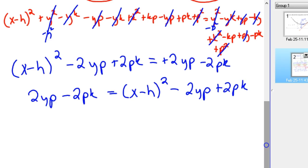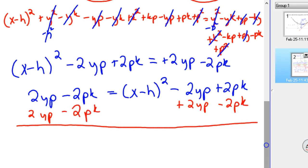Now we can go ahead and get these two together, so we're going to add the 2YP over, and we're going to subtract the 2PK from this side, subtract the 2PK from this side, and we've got 4YP minus 4PK equals X minus H squared.